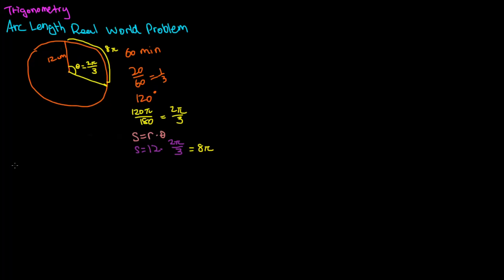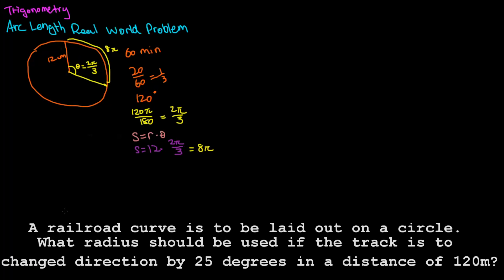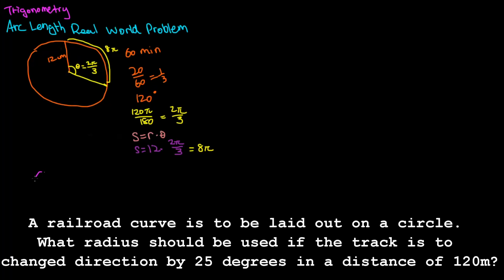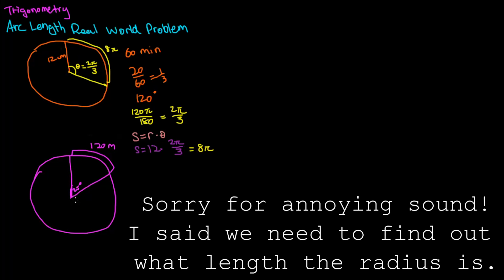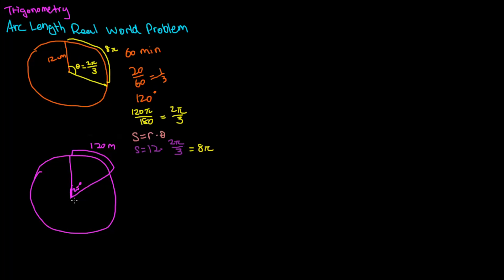Let's go ahead and do another one. This one is also going to be a real world problem. It says a railroad curve is to be laid. Let's go ahead and draw a curve. It says we need to find a radius that we should use if we want the track to change directions by 25 degrees. We want the curve to be a distance of 120 meters to find out what the length radius we should use.